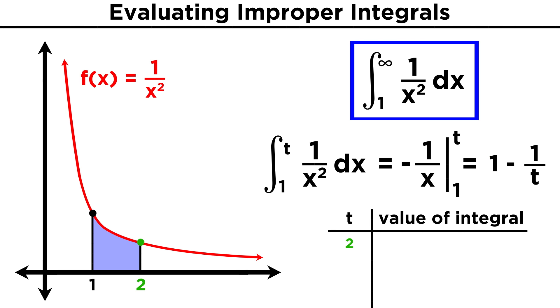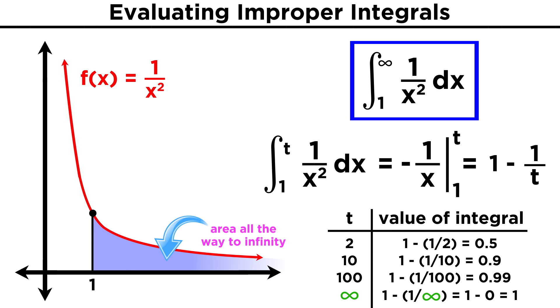So if we take t to equal two, we get one minus one half, which is one half. If we take t to equal ten, we get one minus one tenth, or nine tenths. We can plug in larger and larger values for t, and we get closer and closer to one, and if we plug in infinity for t, which means integrating over this whole portion of the function all the way to infinity, then we get one as the answer.